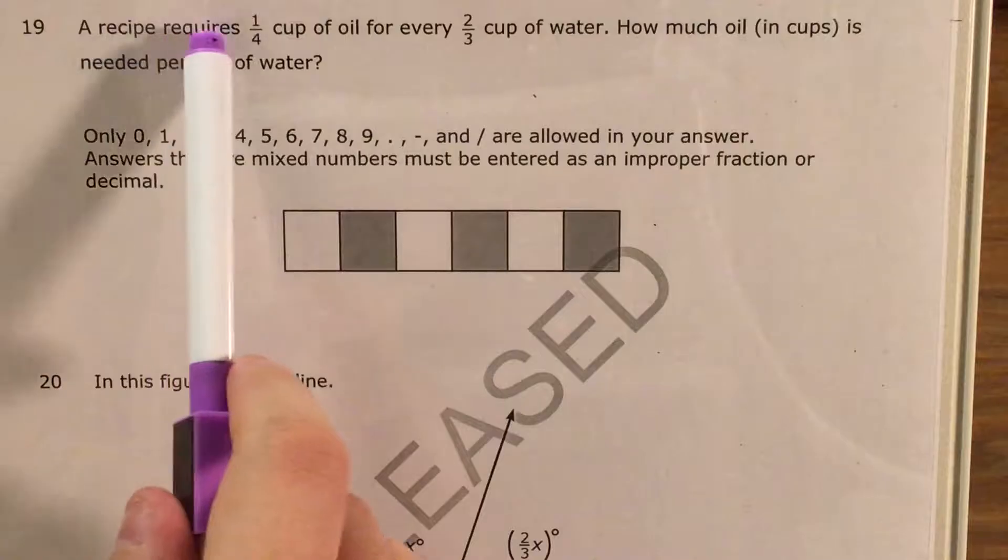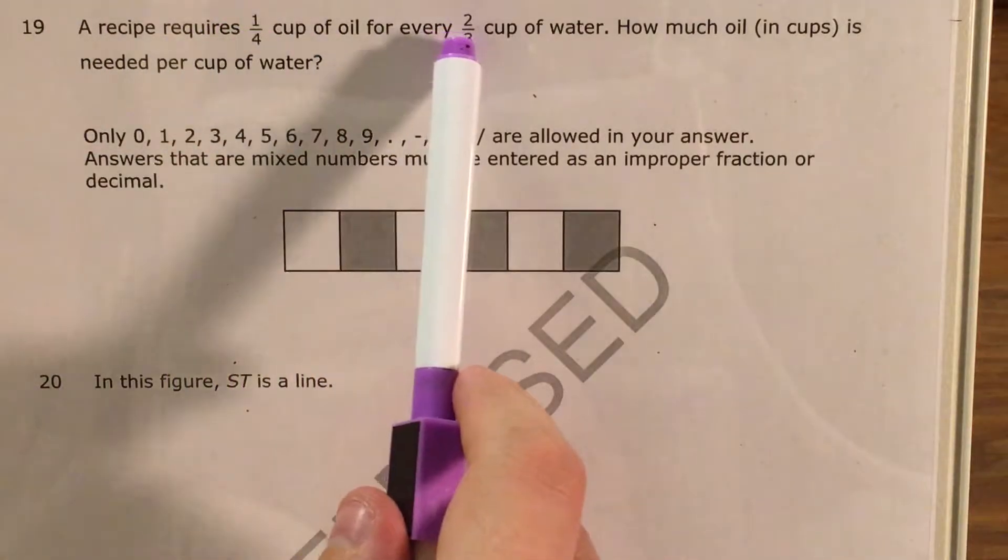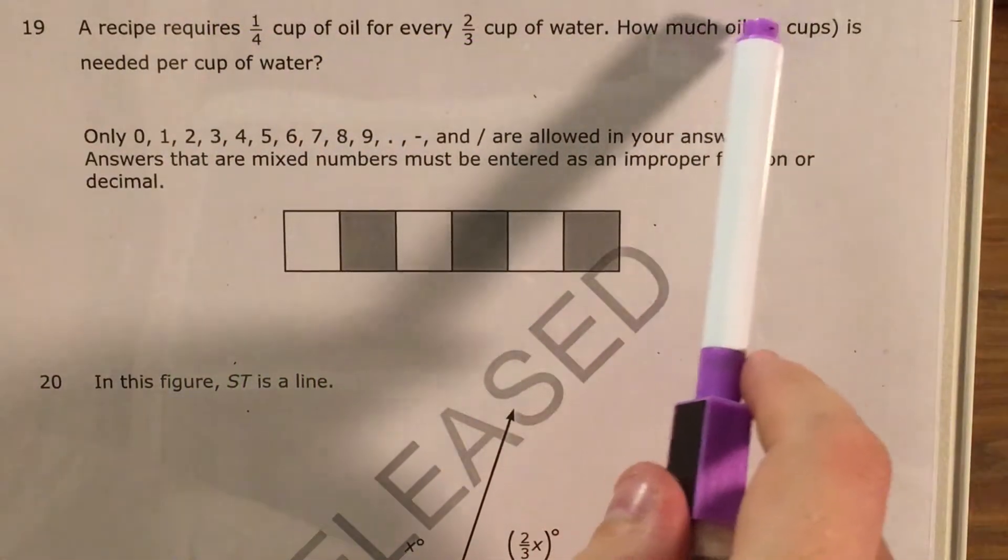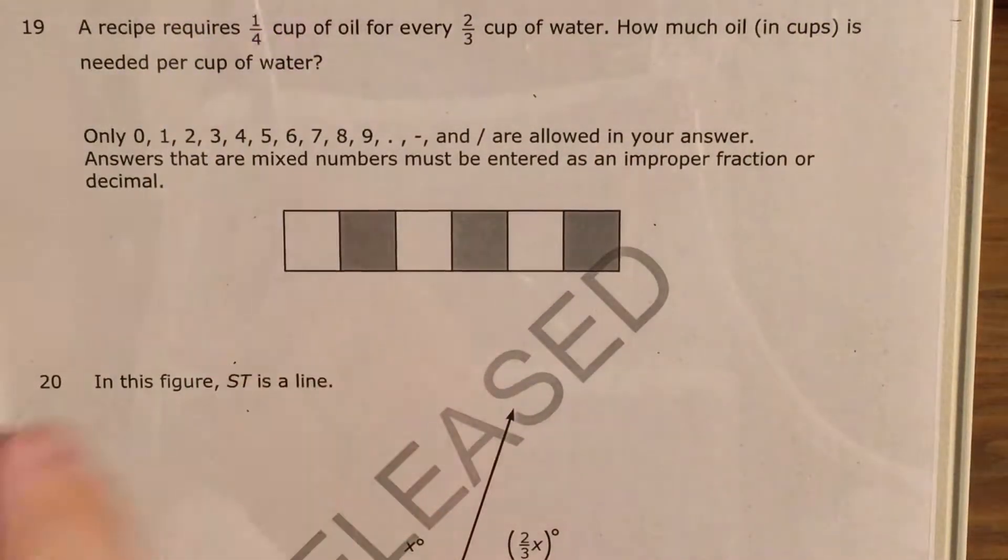The question tells us that a recipe requires a quarter cup of oil for every two-thirds of a cup of water. And we're trying to figure out how much oil in cups is needed per cup of water.